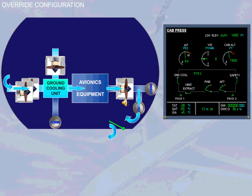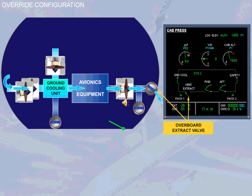In some failure cases, the override configuration is activated. In this case, the overboard extract valve is partially open. The underfloor extract valve is closed. On the ECAM, the valve indication changes to an intermediate position.